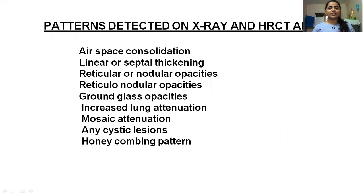Patterns detected on HRCT and X-ray include: airspace consolidation, linear and septal thickening, reticulonodular opacities, ground glass opacities, increased lung attenuation, mosaic attenuation, cystic lesions, and honeycombing pattern.